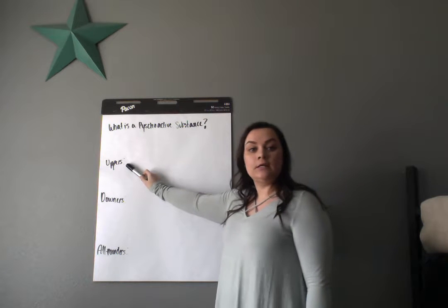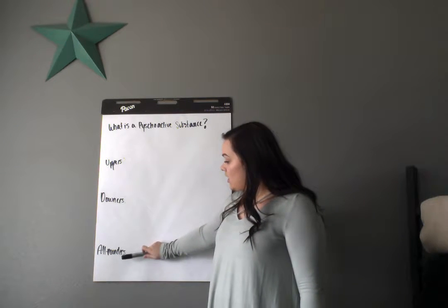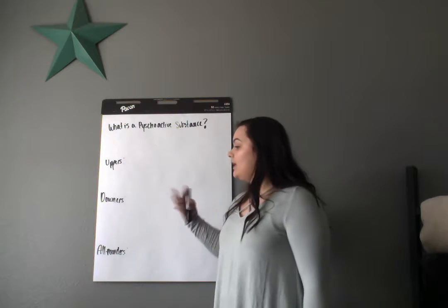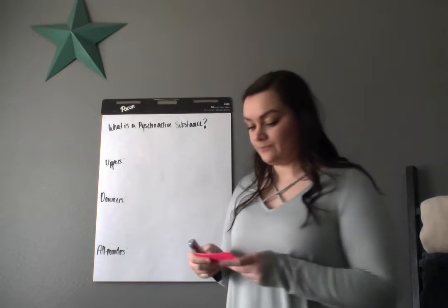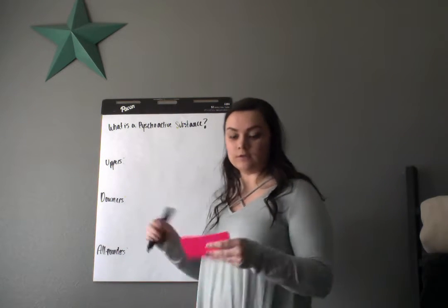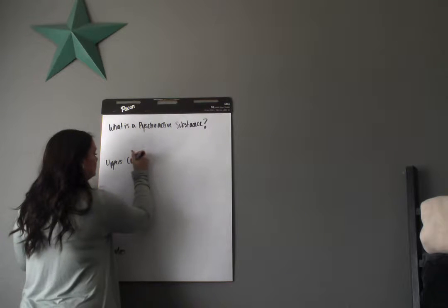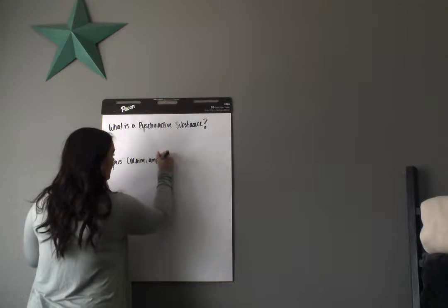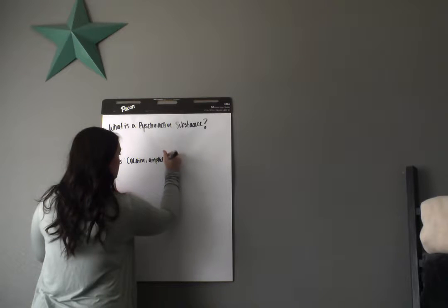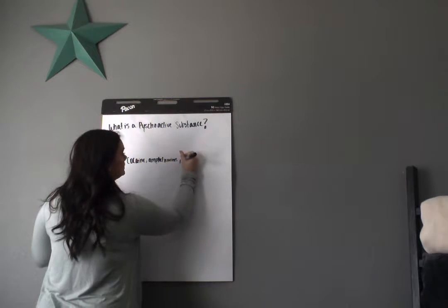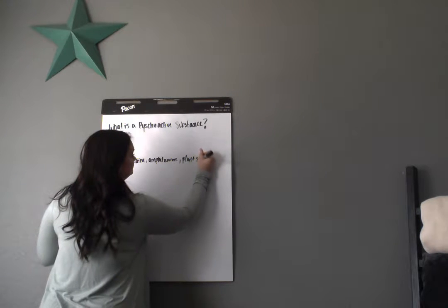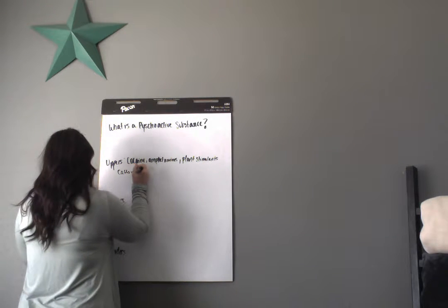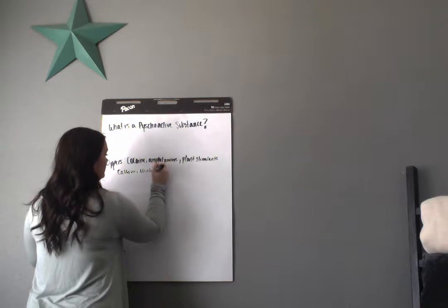Uppers is going to be your stimulants. Downers is going to be your suppressants. And all-arounders is going to be things such as LSD, marijuana, things that kind of fog your mind. So I'm going to start with uppers. Uppers are going to be things, I'm going to write these down, these type of drugs. So we have cocaine. And excuse me if I spell these wrong. Amphetamines such as Adderall. We have plant stimulants. We have caffeine and nicotine. These are some of the uppers.